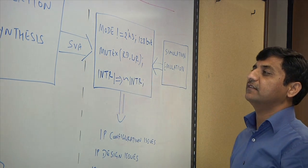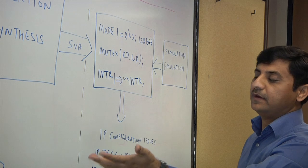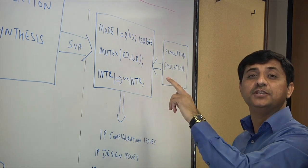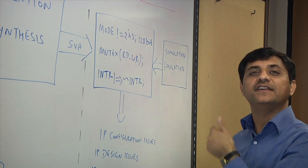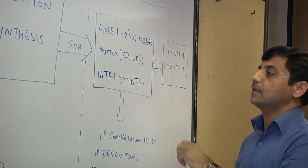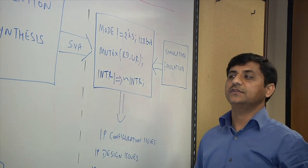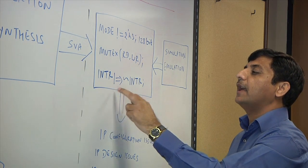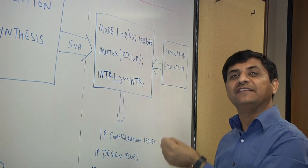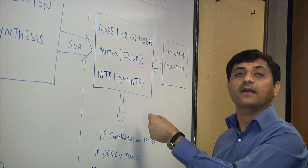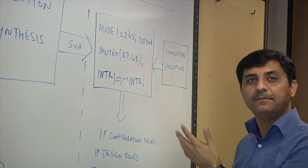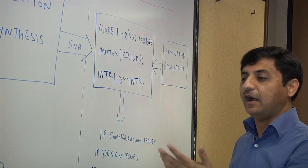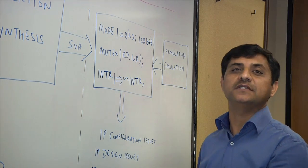Second property what it describes is I have a function where I can have read and write, but they cannot be true together. You cannot have read and write function together. Third one is what you're describing here is that you have an interrupt and you assert an interrupt, but in the very next cycle you take it back. So these three properties are describing different functions, how your IP is supposed to behave and how it has been tested at IP level.